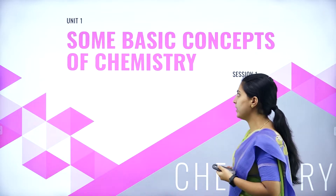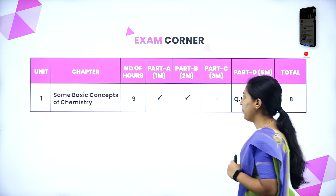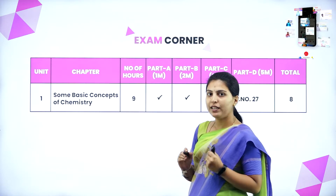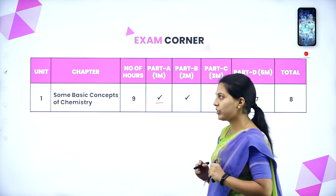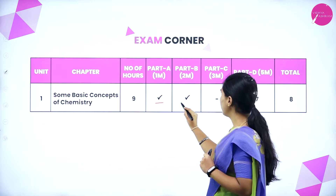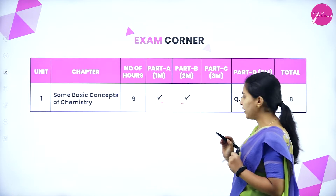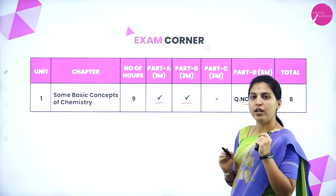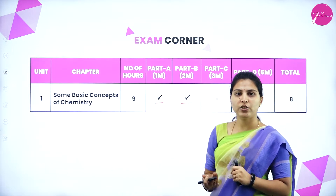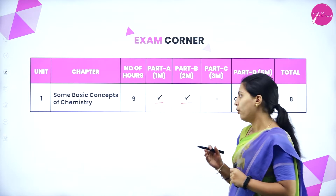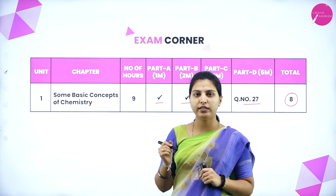First we will see the exam corner — the weightage of marks allotted for this chapter. For one-mark questions, there will be one question. For two-mark questions, one question overall, and for five-mark questions at question number 27, one question — with possible internal choice. Overall, 8 marks will be allotted for this chapter.